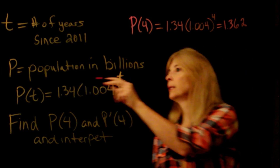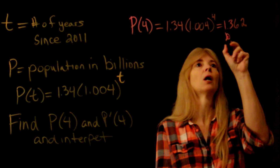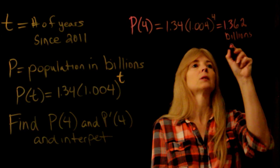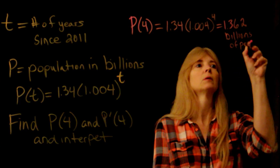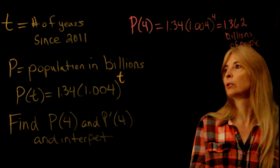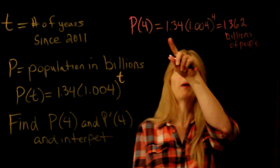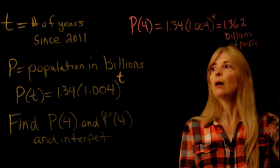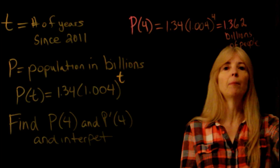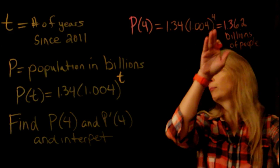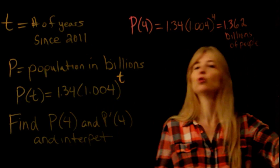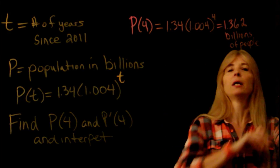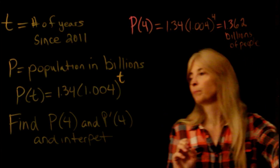This is in billions, so billions of people. So in other words, that would be the population. I'm putting in 4, so in 2015, the population would be 1.362 billion.